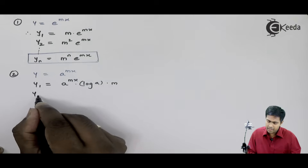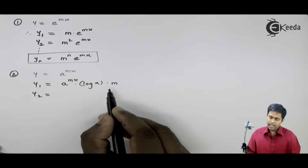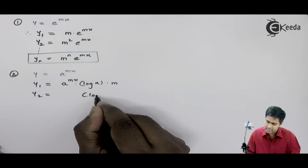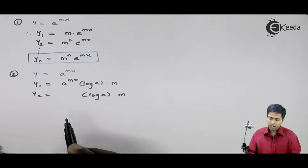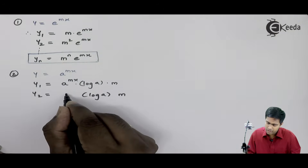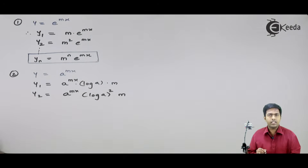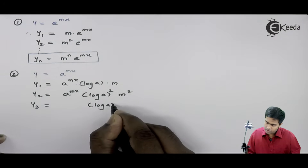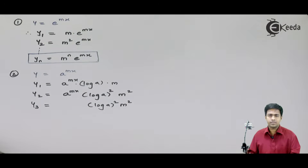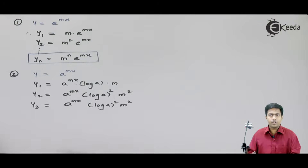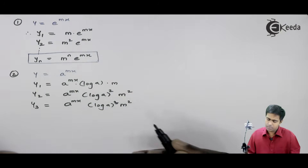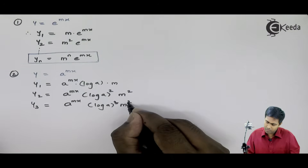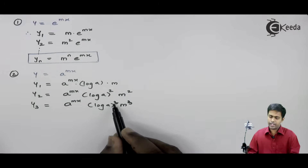Similarly, if I find the second derivative of this term, then m and log a are already constants, so I will write them as they are. The derivative of a raise to mx gives a raise to mx into log a. So log a appears twice, giving log a square, and m becomes m square. For the third derivative y3, log a square and m square are constants. We take the derivative of a raise to mx again, giving a raise to mx into log a — so this becomes cubed. And m again becomes m cube.